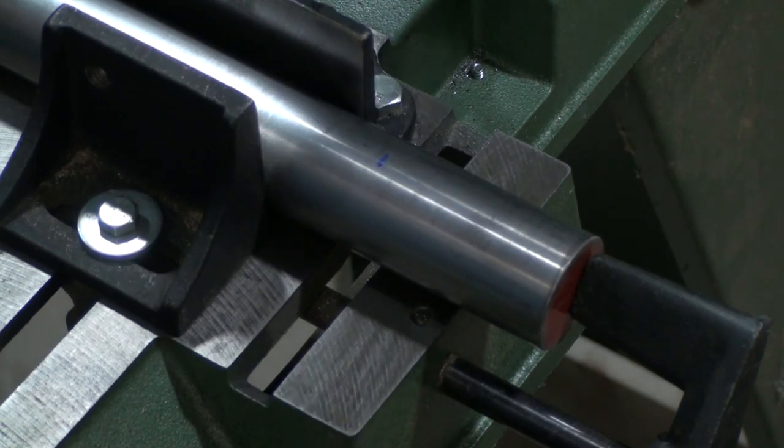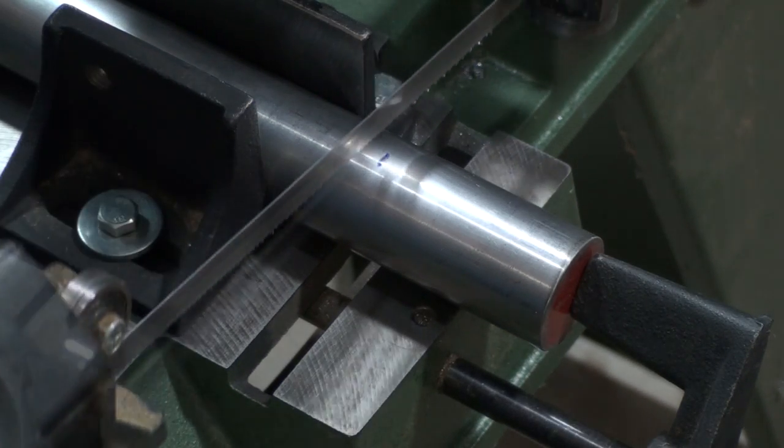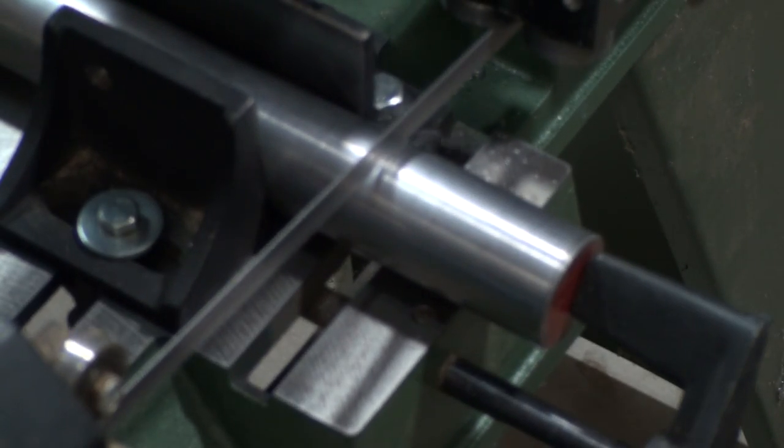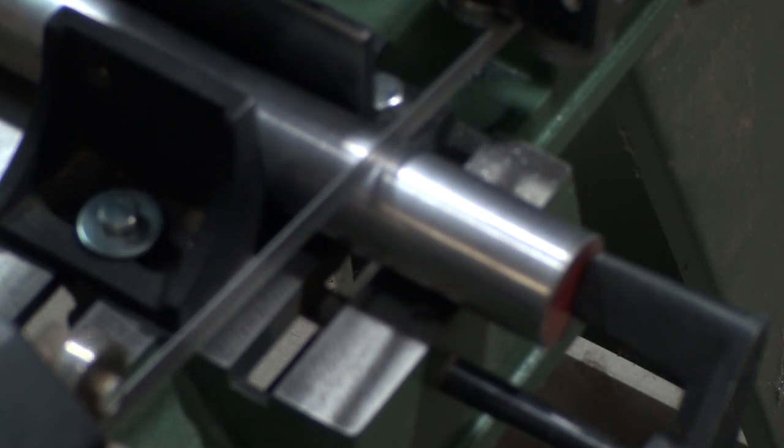It takes about 8 to 10 minutes to cut all the way through, so you can be cutting a tool holder on the mill while you're cutting out the next piece on the bandsaw.